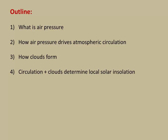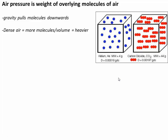The outline for this lecture is: first we'll introduce the idea of air pressure, then we'll talk about how air pressure drives atmospheric circulation, then we'll talk about how clouds form, and finally we'll combine that to look at how circulation plus cloud formation ultimately governs the amount of local solar insolation you're likely to get.